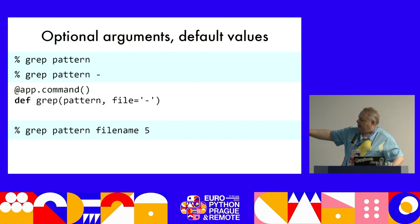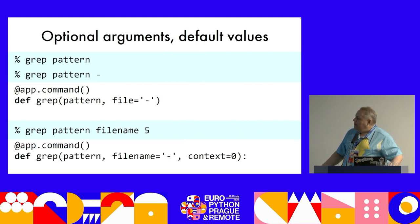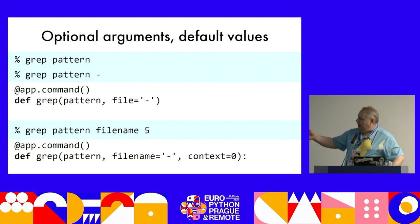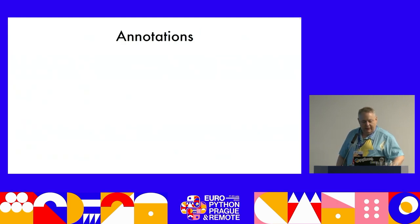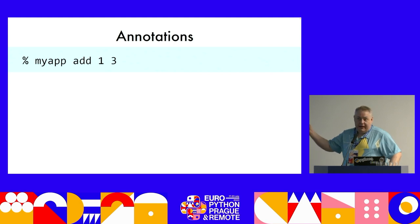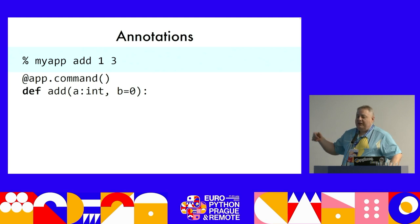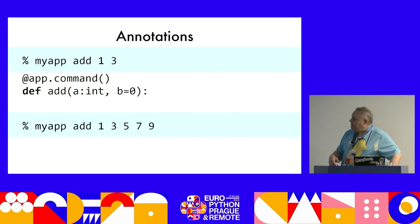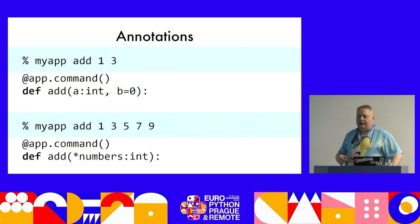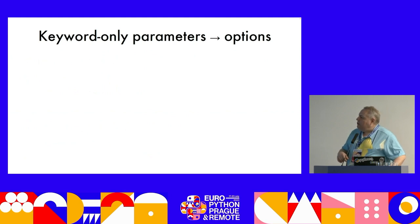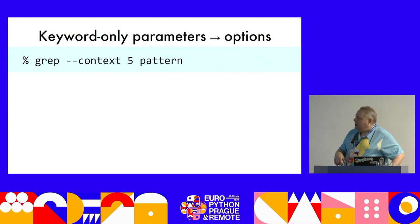If you want an integer parameter without a default value, just use an annotation. For example, an add function where the first parameter is annotated with int, and the second has a default value of zero. For an arbitrary number of integers, annotate star args with int — you can annotate star args and double-star kwargs, though they can't have default values. Keyword-only arguments map to options; a context argument with a default of zero becomes an option that takes an op-arg converted to integer.